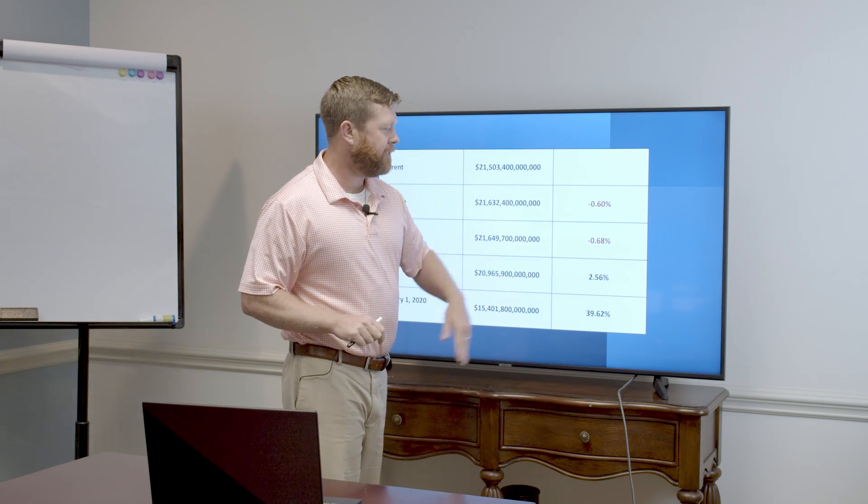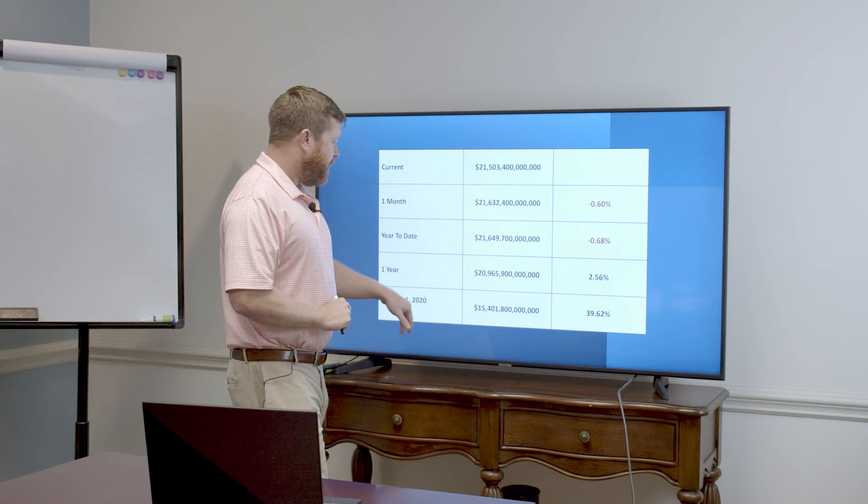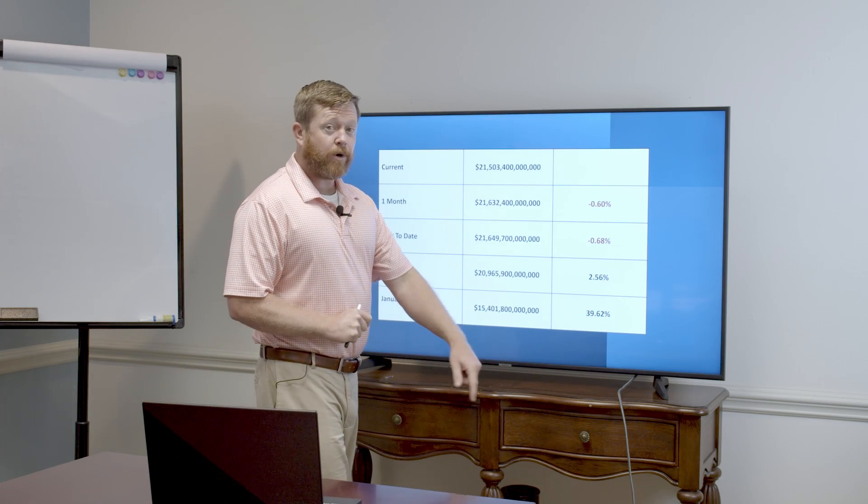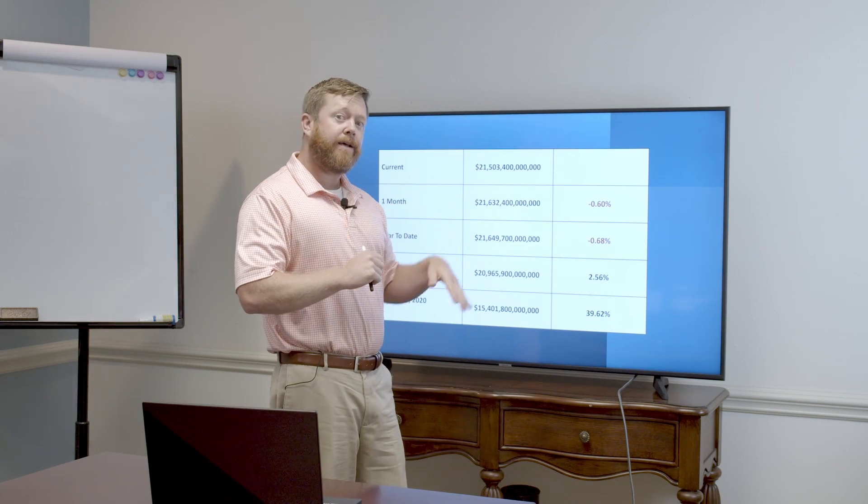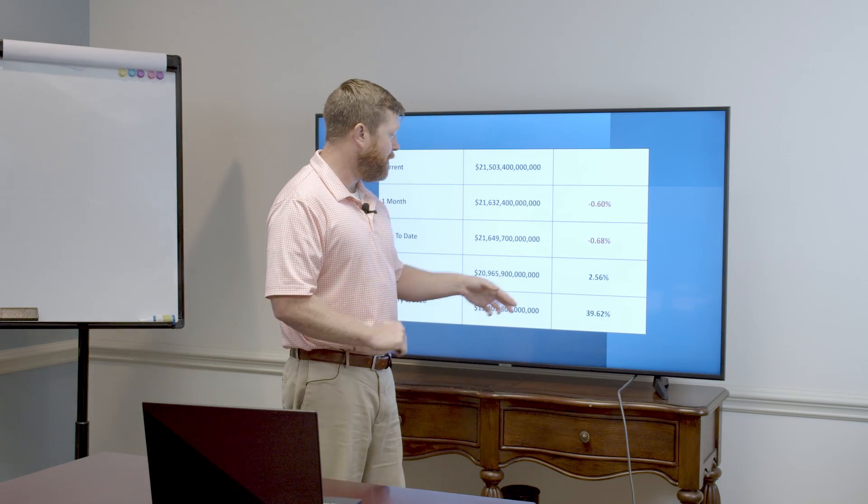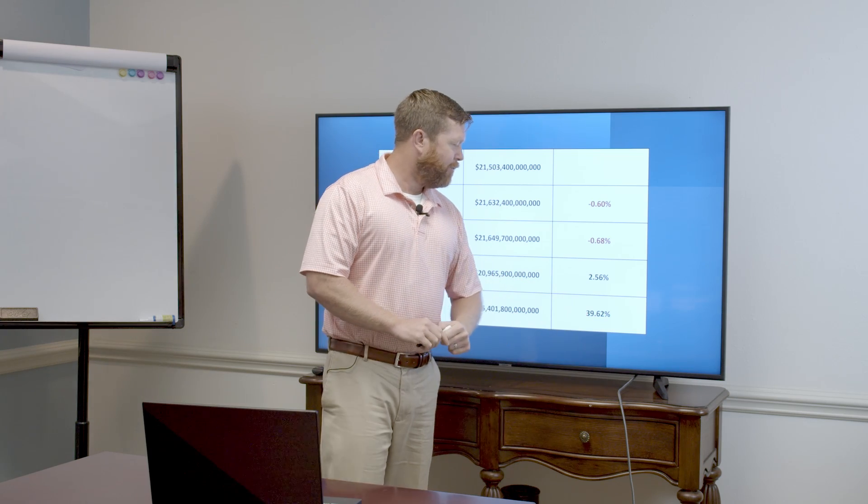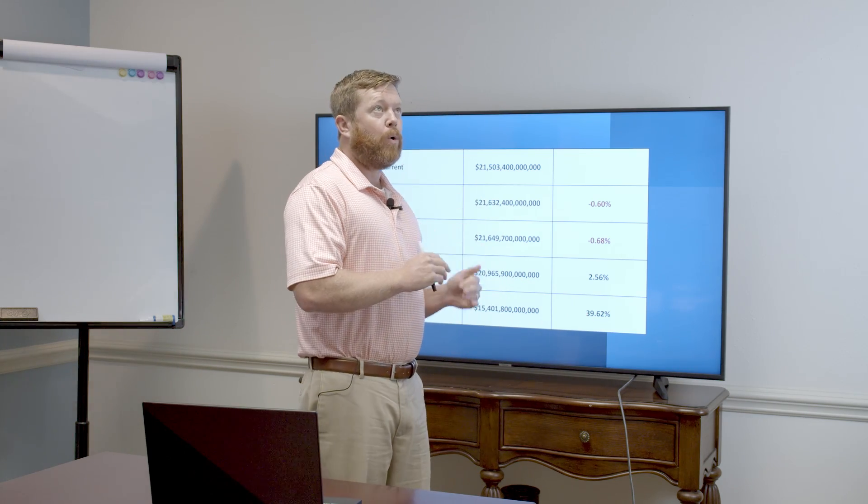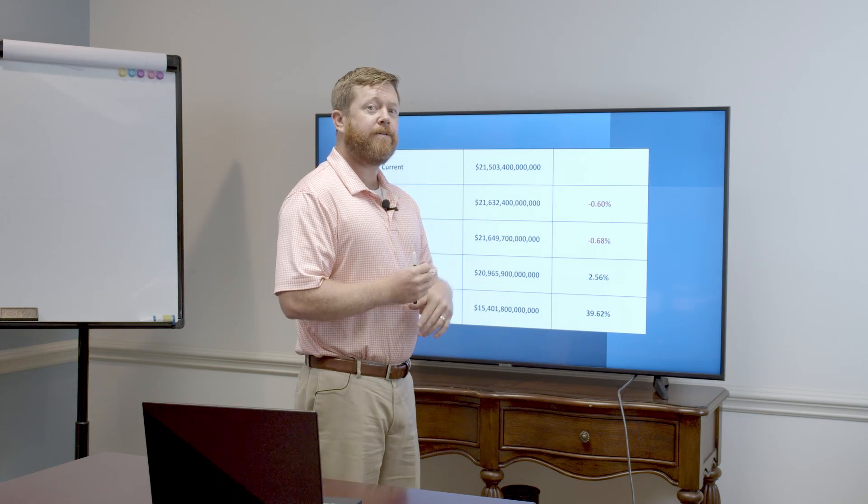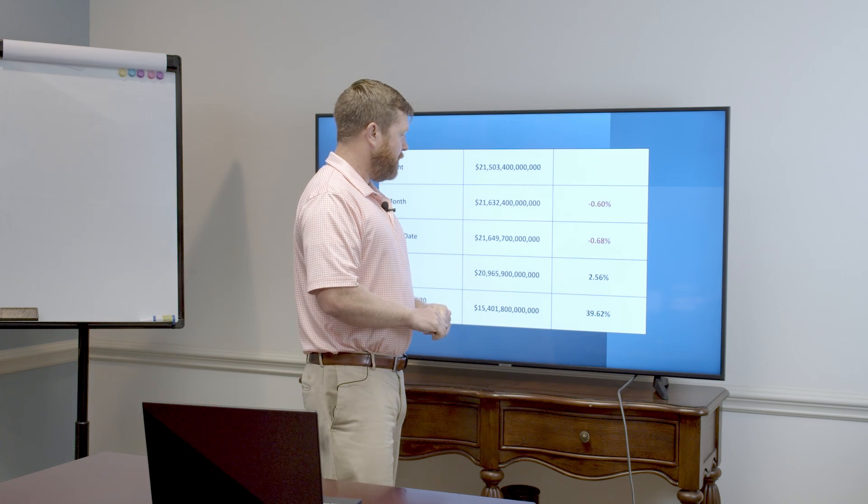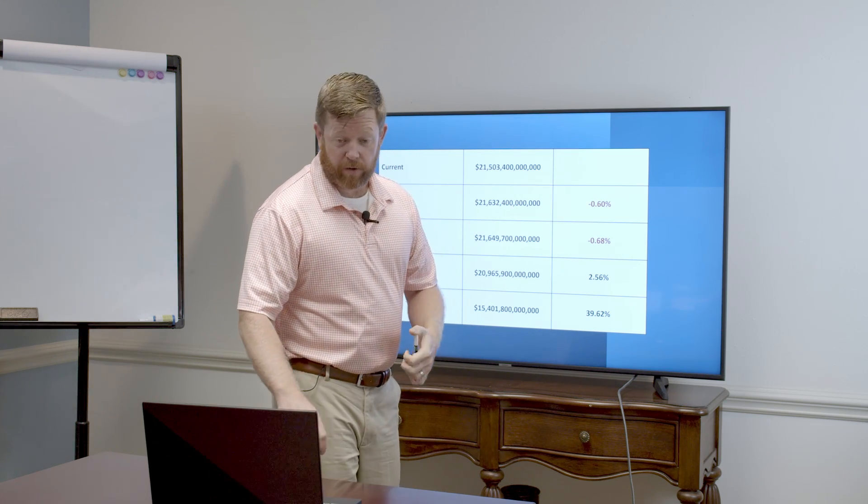But we're still plus on the one year. January, the pre-COVID was $15.4 trillion before we saw that big spike up in printed money. So we're still 39.62% more dollars circulating than what we had before we just shut down an entire country, or world, actually, the whole globe.